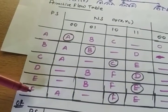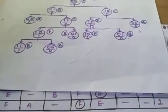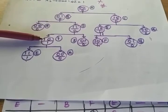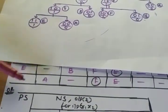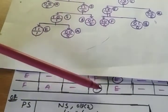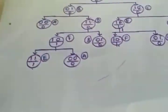Consider the last row, f. For state f with 0,0 input, the next state is a only. For f with 0,1, it is not defined — so it is dash. For f with 1,0, the next state is f only. For f with 1,1, the next state is e only. Like that, I completely filled up the primitive flow table.